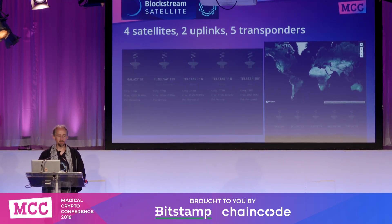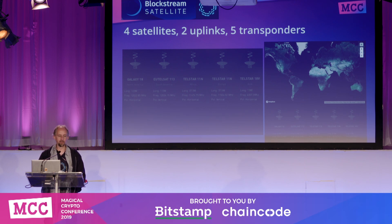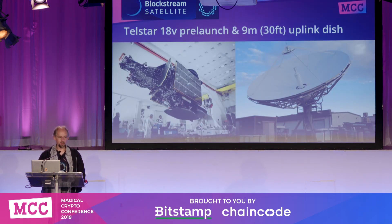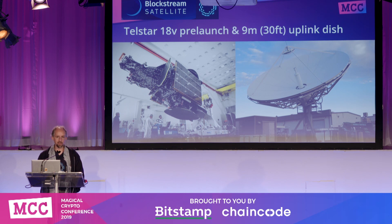First of all, what it is: it's a set of satellites. There are four satellites and two uplinks, which are base stations sending signal up to the satellites, and five transponders. People sometimes make the mistake of thinking there are five satellites — there are actually four. It's just that one of the satellites has two transponders, covering both Asia and Australia. The satellite on the left is Telstar 18V, which was launched by SpaceX late last year, and the service switched over to using that from the previous satellite afterwards.